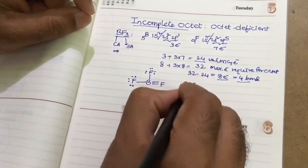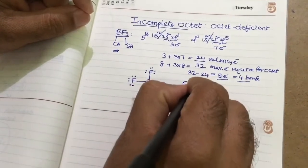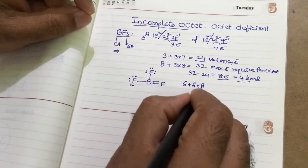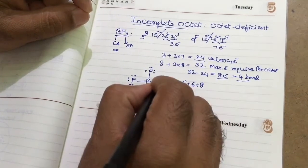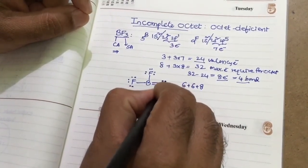So this is 6 electrons and 6 electrons. 6 plus 6. And this 4. This is 8 plus 6, 14. 14 plus this is 20. Then we have to arrange the remaining 4 electrons like this.